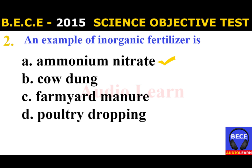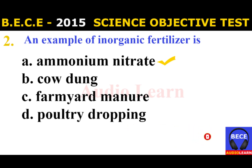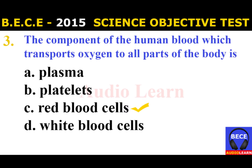Number 2: An example of Inorganic Fertilizer is A. Ammonium Nitrate, B. Cowdung, C. Farmyard Manure, D. Poultry Dropping. The answer is A. Ammonium Nitrate. An example of Inorganic Fertilizer is Ammonium Nitrate.